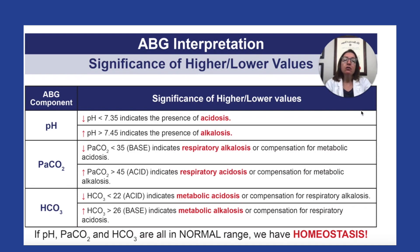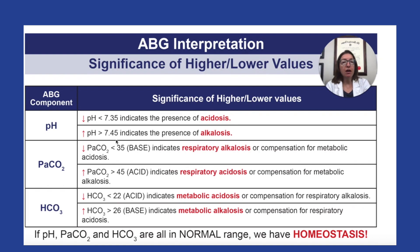With the pH, it should be between 7.35 and 7.45. If it is under 7.35, that means we have acidosis. If it is over 7.45, that means we have alkalosis present.